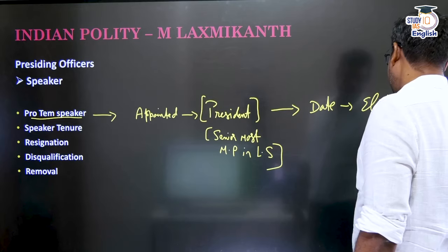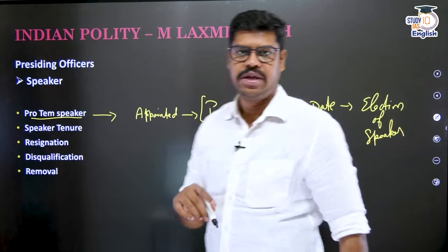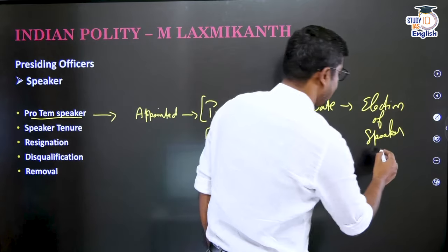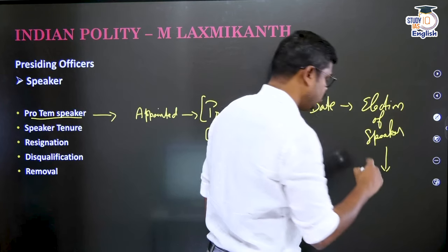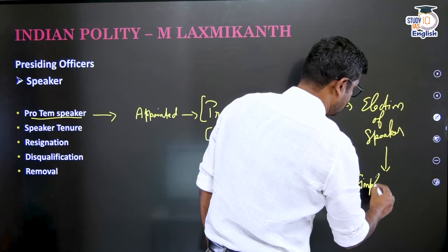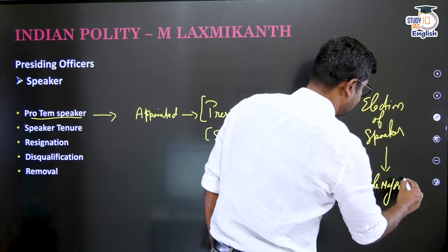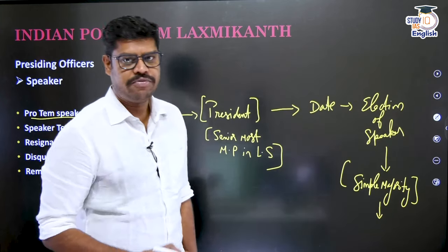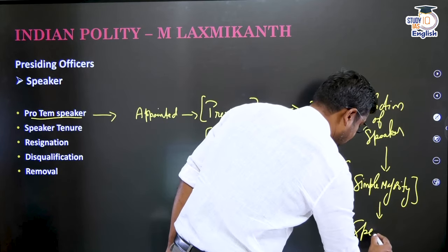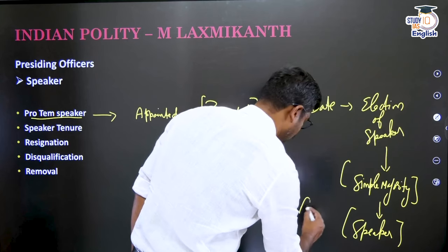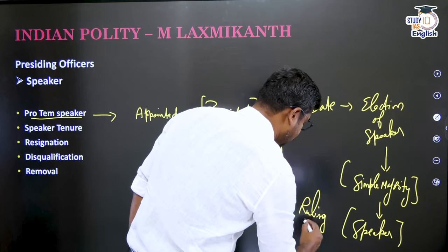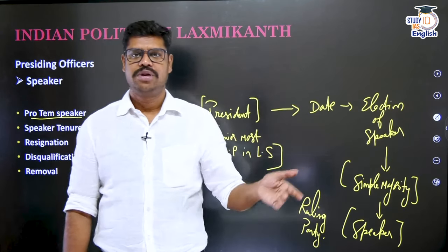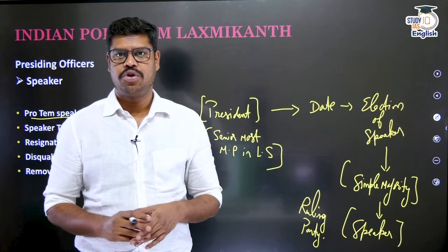In the election of the Speaker, only a member of parliament from the Lok Sabha can contest, and all members in the Lok Sabha vote. Whoever is elected by simple majority becomes the Speaker. Normally it is the ruling party that has the majority, so the Speaker is usually from the ruling party — for example, Mr. Om Birla is from BJP. Once a new Speaker is elected, the office of the Speaker Pro Tem automatically ceases to exist.